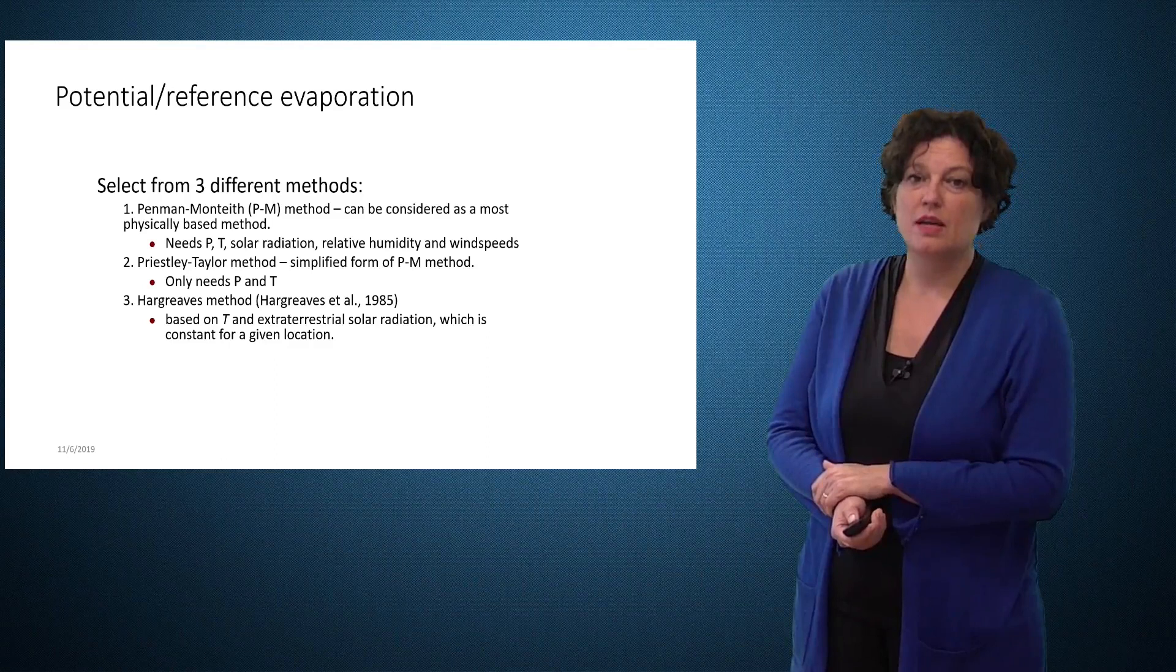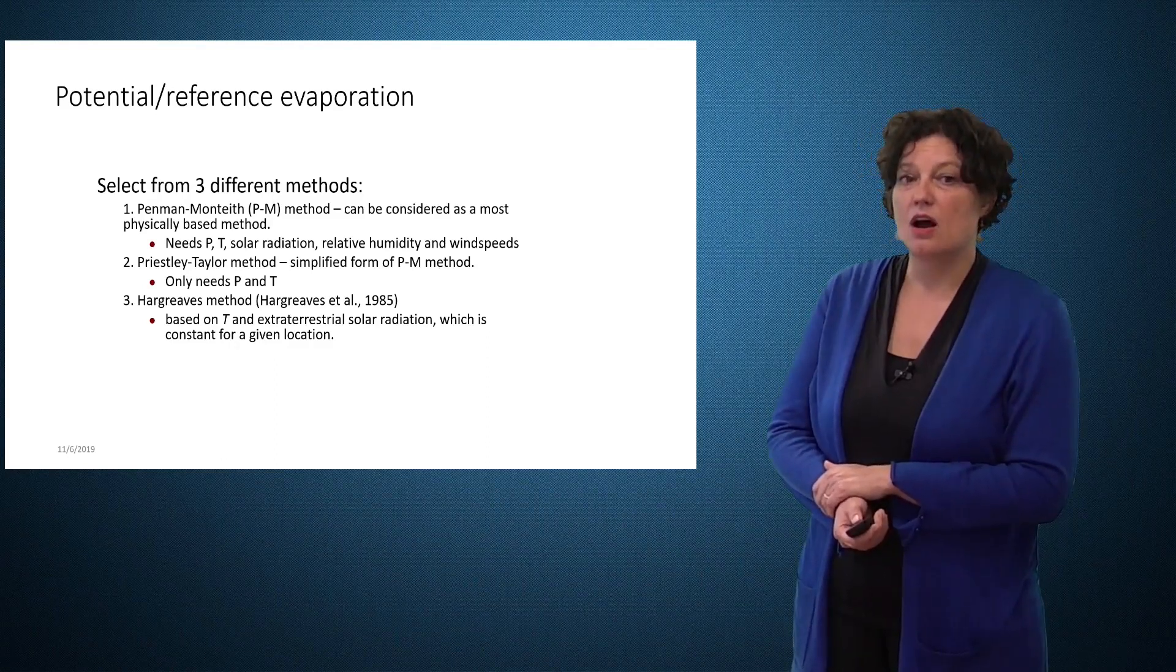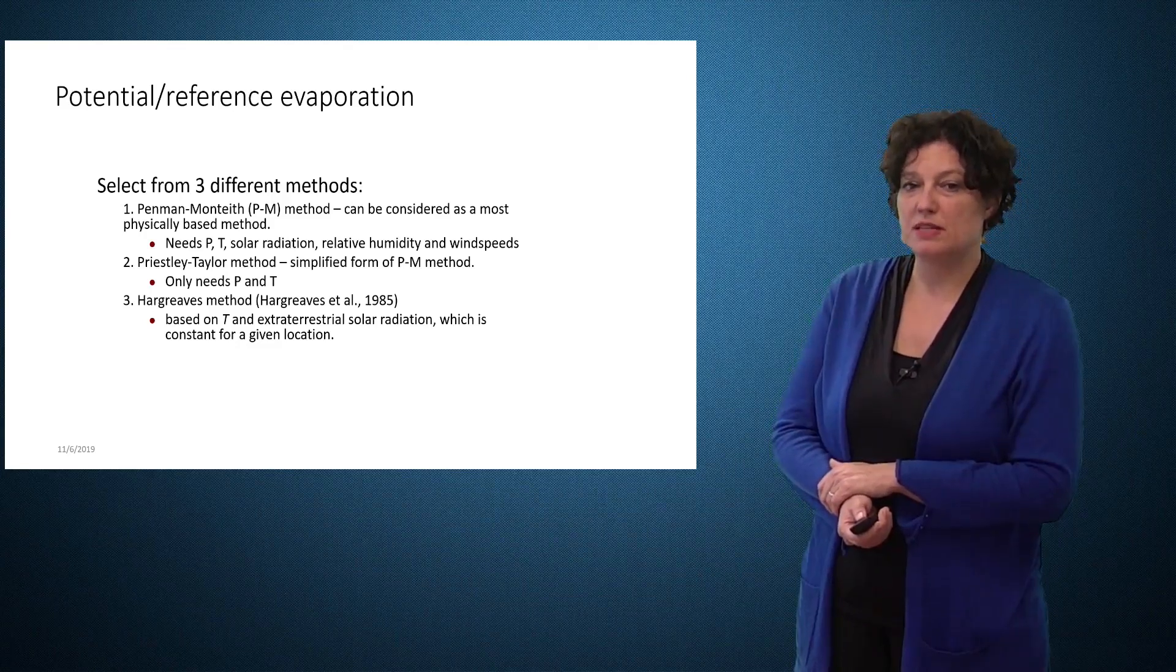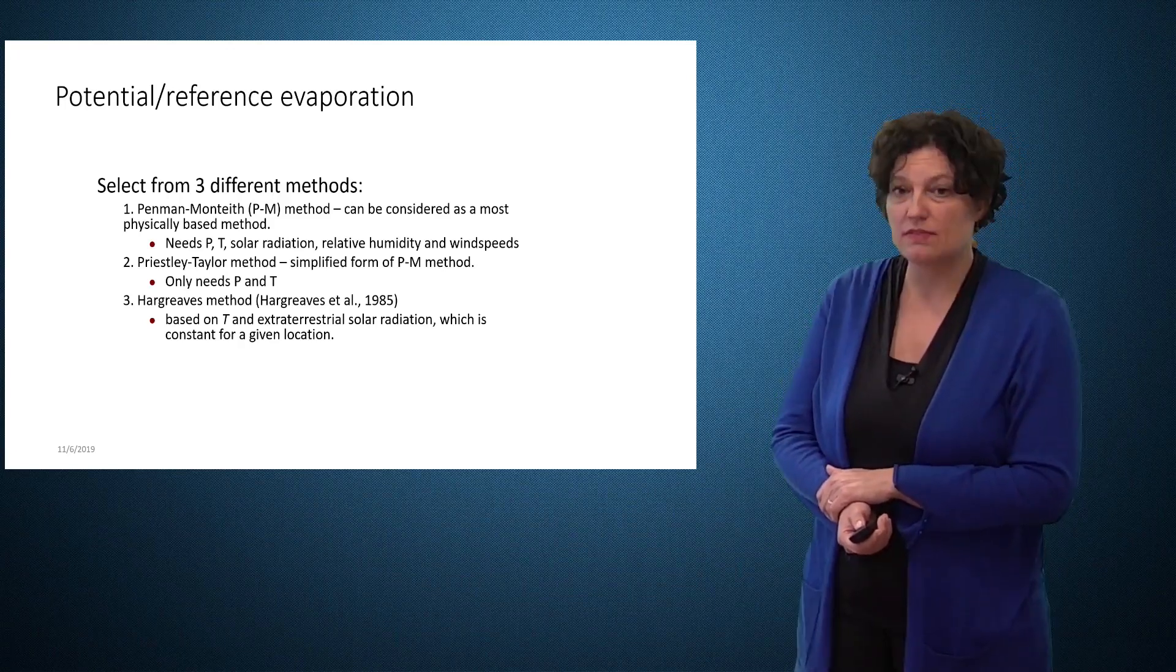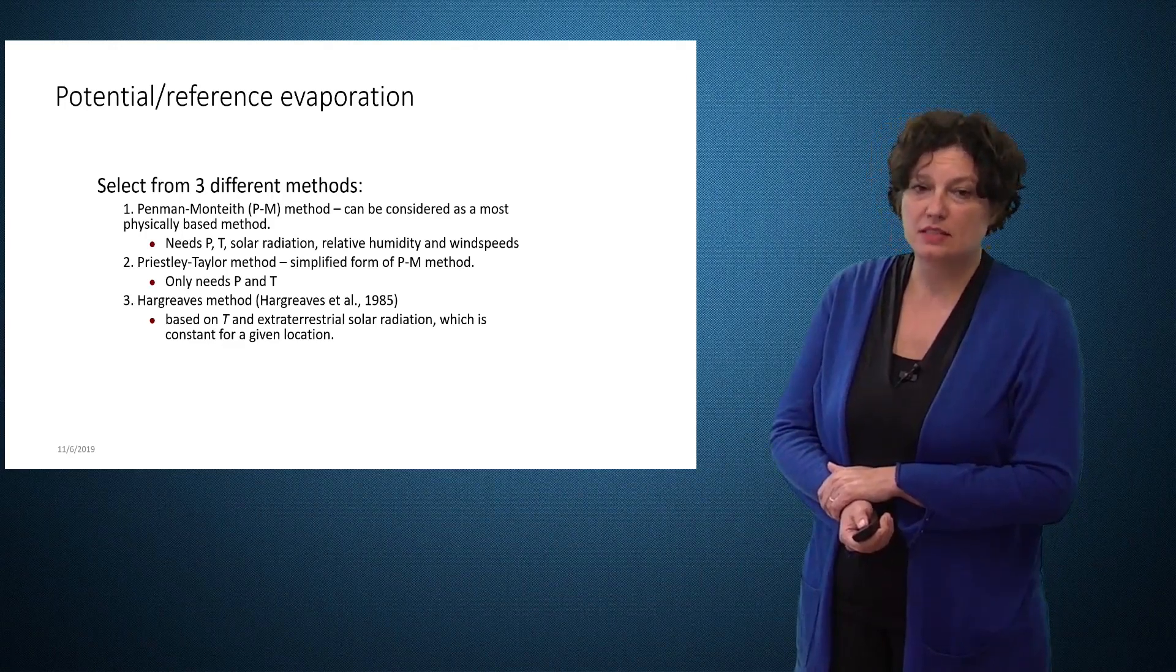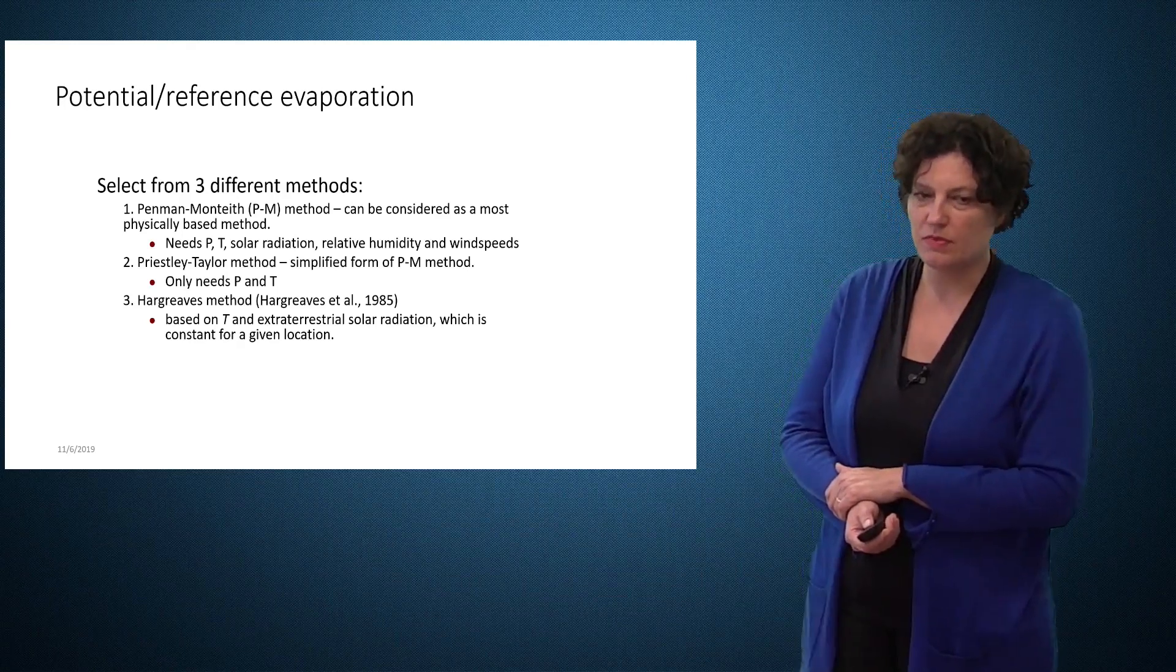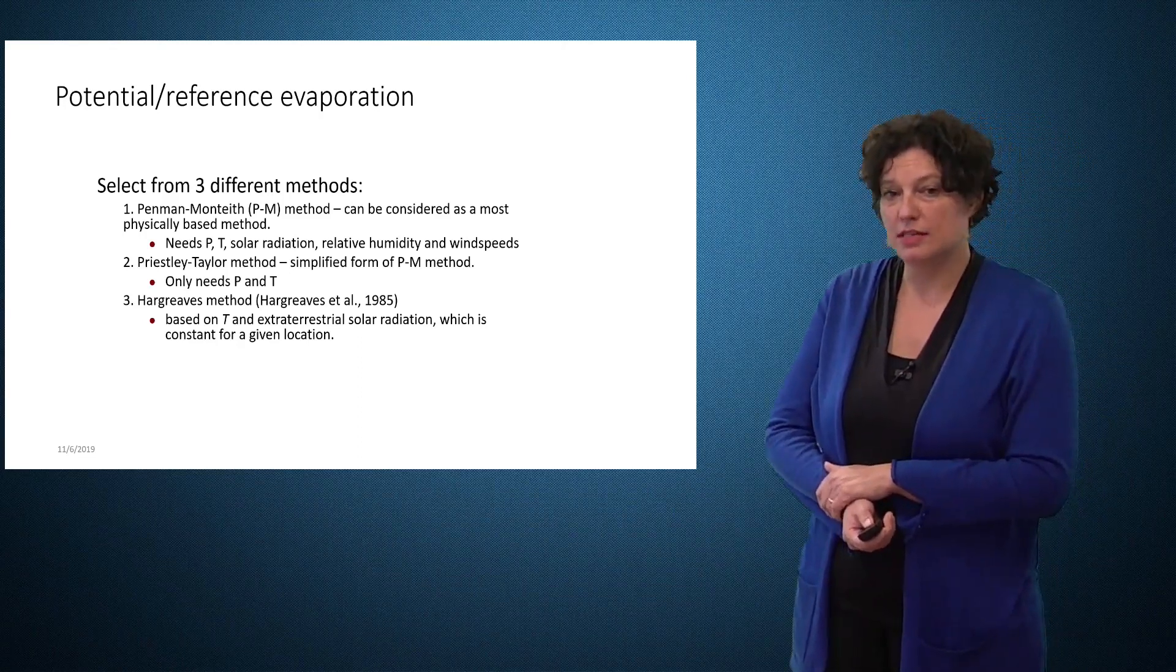One of them is evapotranspiration. Evapotranspiration is calculated out of potential or reference evaporation. For this there are three methods within SWAT. There is the Penman-Monteith method, which is considered as the most physically based method, but it needs a lot of data. Besides rainfall and temperature, it also needs solar radiation, relative humidity and wind speeds. We also have Priestley-Taylor method and Hargreaves methods, and they require less data.